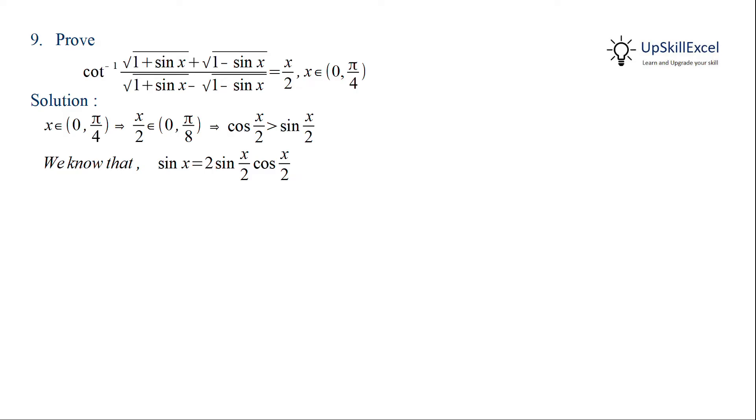We know that sin x can be written as 2 sin x by 2 and cos x by 2, and 1 can be written as sin square x by 2 plus cos square x by 2.